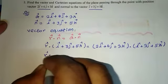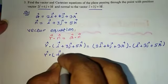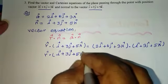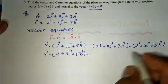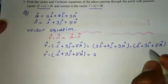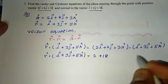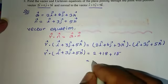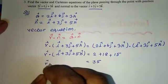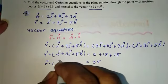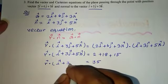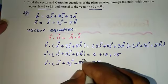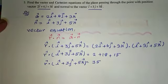So, r⃗ · (î + 3ĵ + 5k̂) = 2(1) + 6(3) + 3(5) = 2 + 18 + 15 = 35. Therefore, the vector equation of the plane is r⃗ · (î + 3ĵ + 5k̂) = 35.